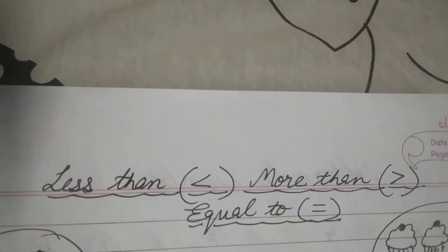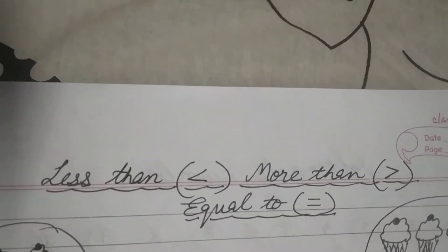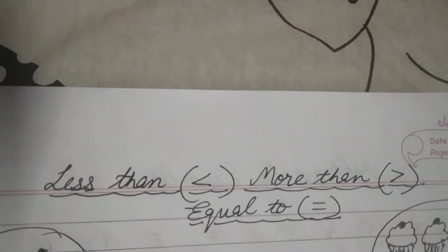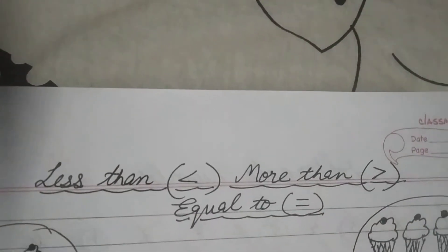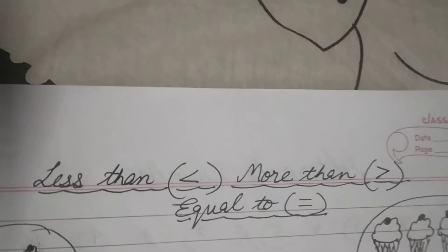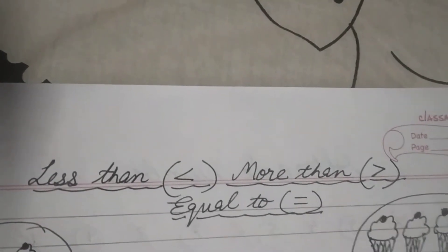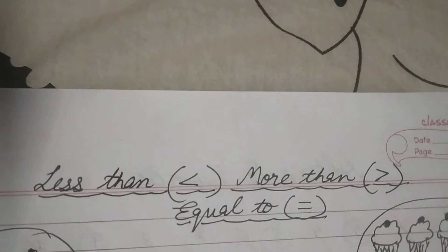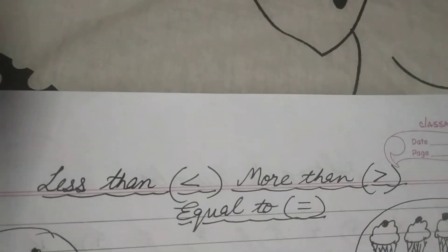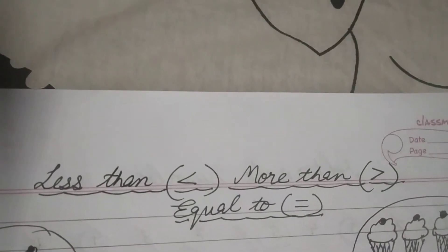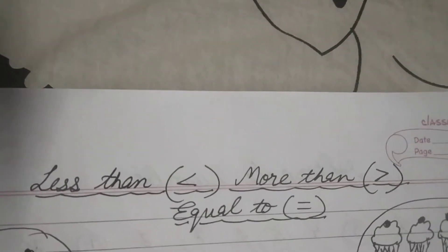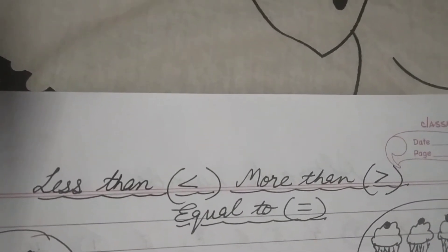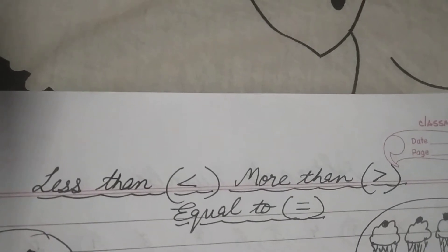Now let's understand what we mean by this. Less than means agar koji chize kisi se kam hoti hai, this is less than this. Suppose counting to aap ko aati hai, jo number pehle aata hai woh chota hota hai, jo number baad me aata hai woh bada hota hai. Jaise counting me 15 pehle aata hai, 30 baad me aata hai, so we can say 15 is less than 30.